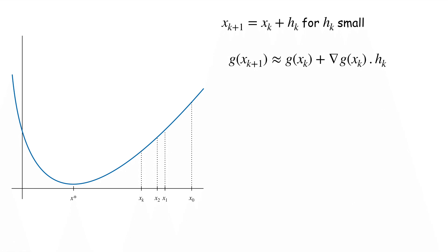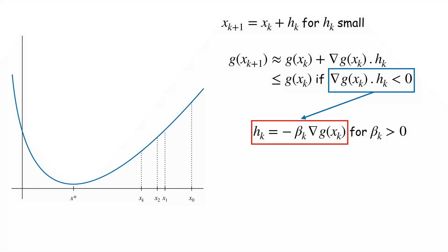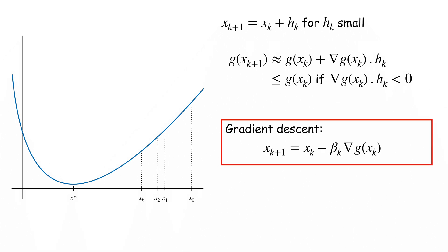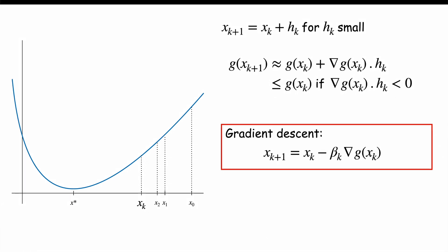Now what value of h_K makes this smaller than G(x_K)? Basically any value such that the term in the blue box is negative. There are many possible choices in the optimization literature, but the most classic one is to take h_K equal to minus β_K times the gradient of G at x_K for some positive β_K. The choice of β_K is actually quite tricky. As you can see on the figure on the left, if β_K is too small, then x_K is too close to x_{K+1} and then to x_{K+2}, x_{K+3} and so on. And in the end, the algorithm may never get close to x*.